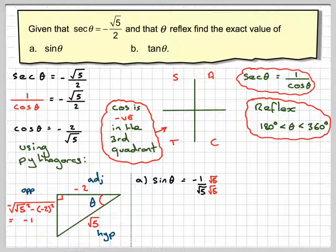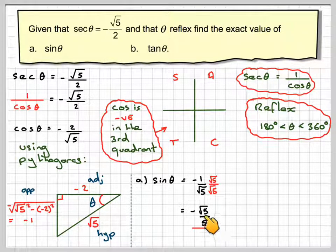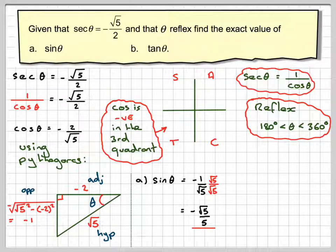So, if we do that, we're going to get minus root 5 over 5.